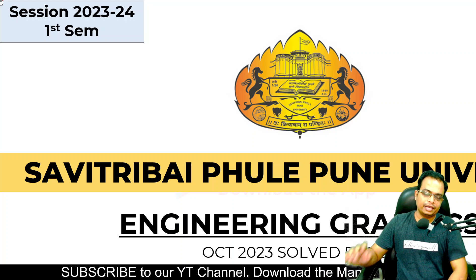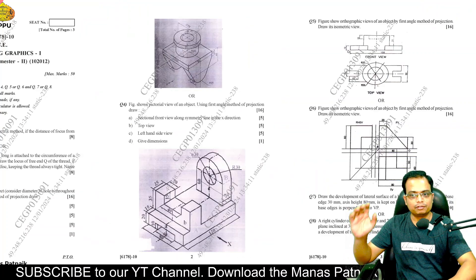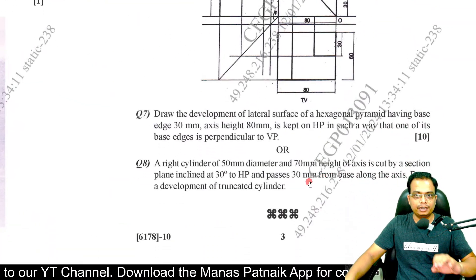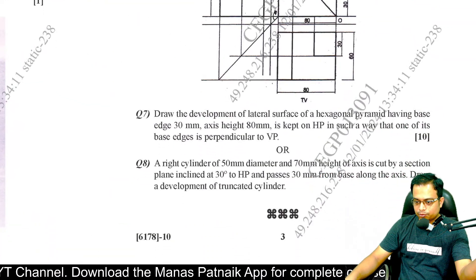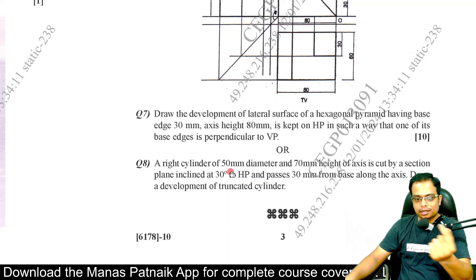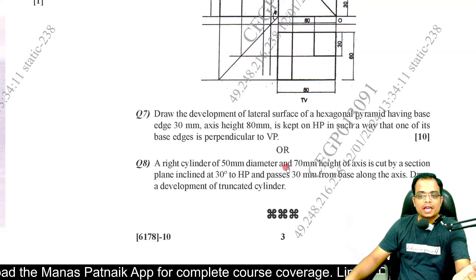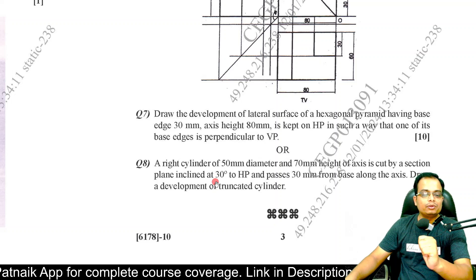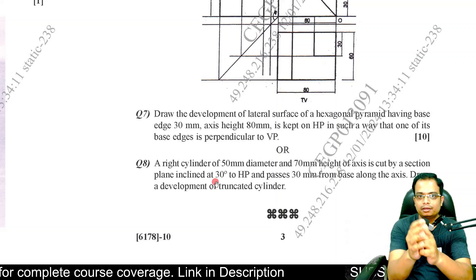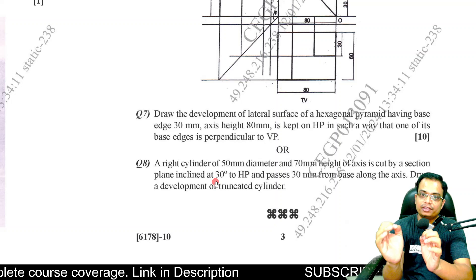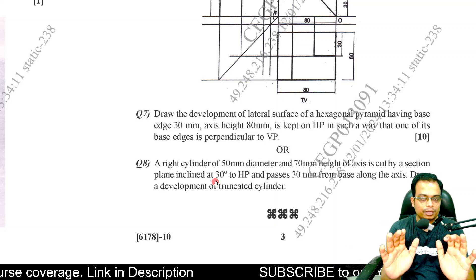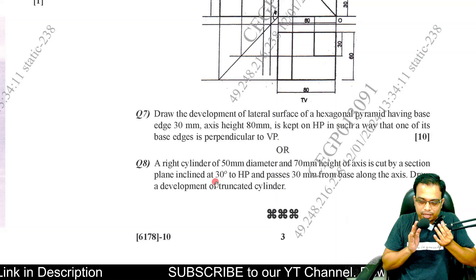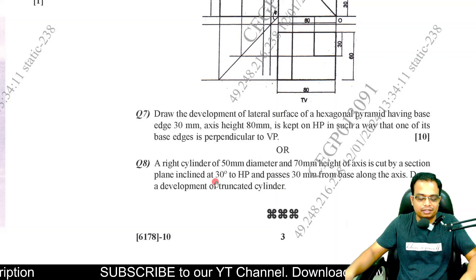Now, over to the last question. This is a problem based on development of surface of hollow solids. It is based on a cylinder, worth 10 marks. There is a cylinder: base is circular, 50mm diameter, height is 70mm, cut by a section plane inclined at 30 degrees to the HP. The cutting plane passes 30mm from the base along the axis. Draw a development of the truncated cylinder.